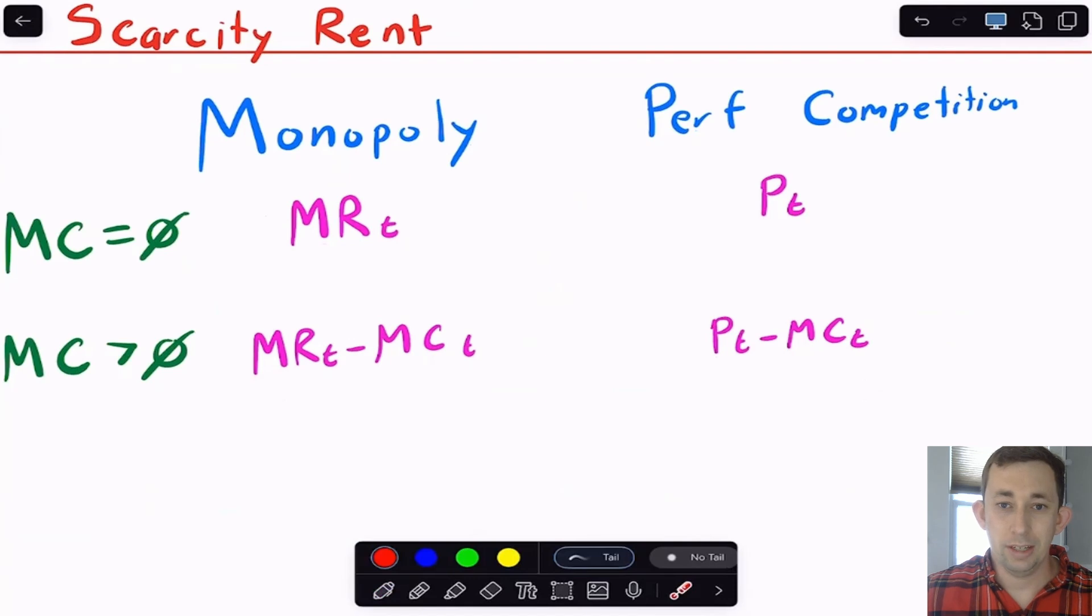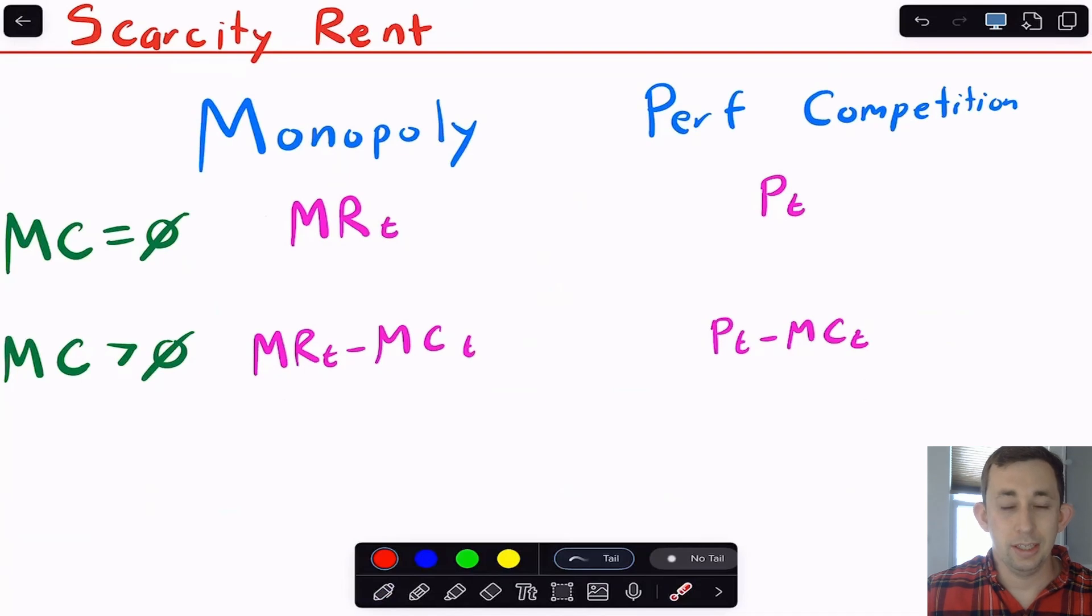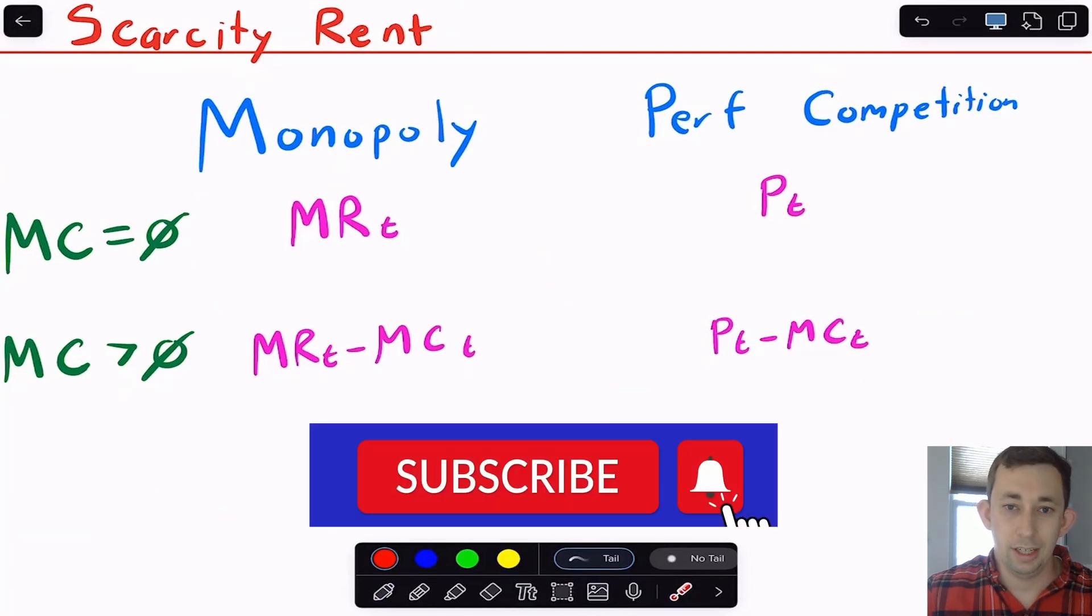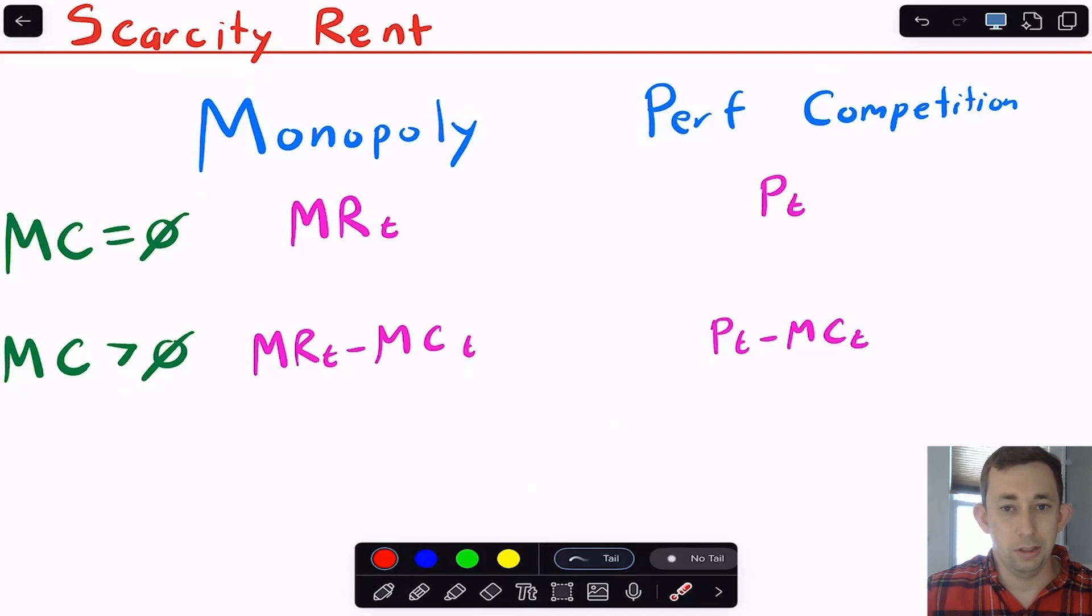If you have marginal costs though, the scarcity rent is just the price minus the marginal cost. In a monopoly setting, instead of price, we're thinking about marginal revenue. So with zero marginal cost, the marginal revenue is increasing at the interest rate. If you have some marginal costs, then scarcity rent is just marginal revenue minus marginal cost. And that's what's going to increase at the interest rate.